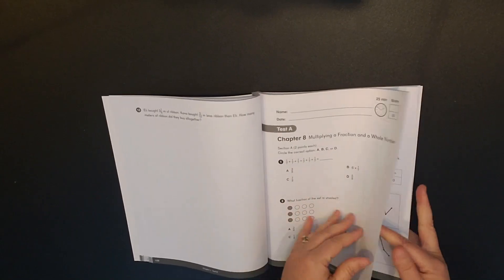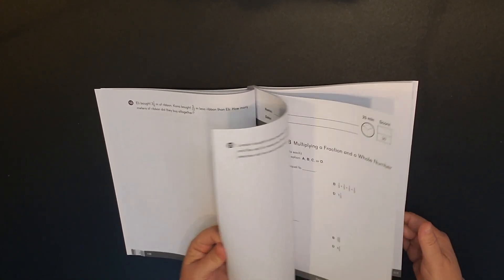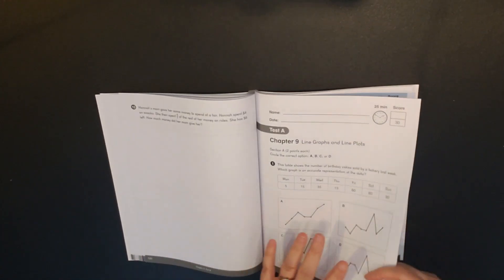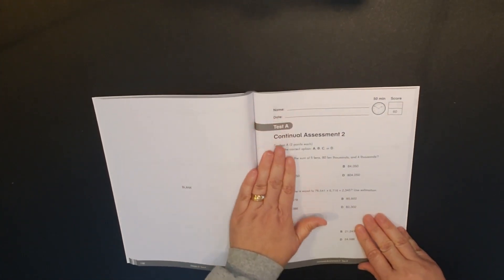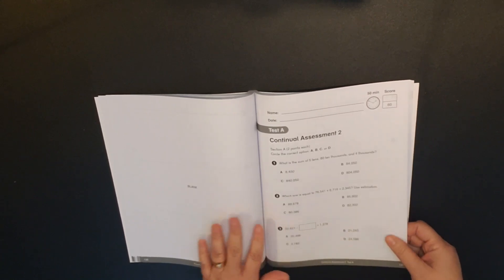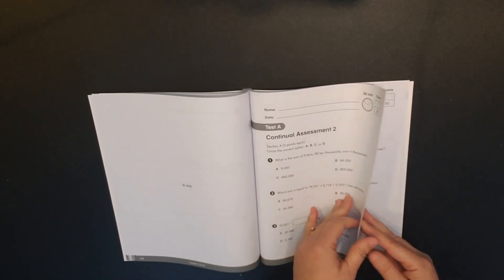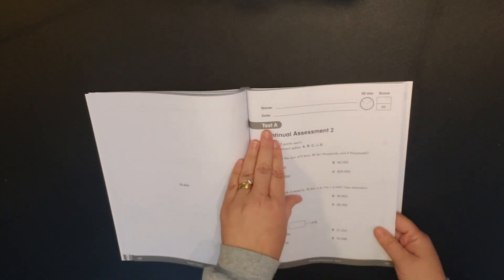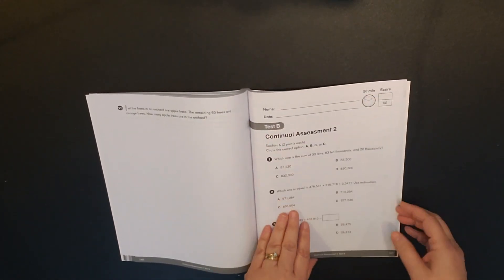Within the test booklet, there is a test A and a test B for each chapter. So you can choose which one you use. There's also two continual assessments. So one is midway through and then the second one is at the very end.